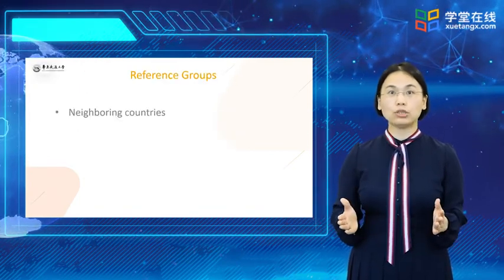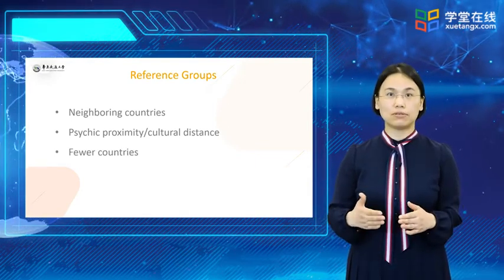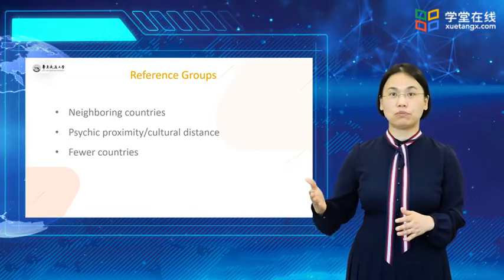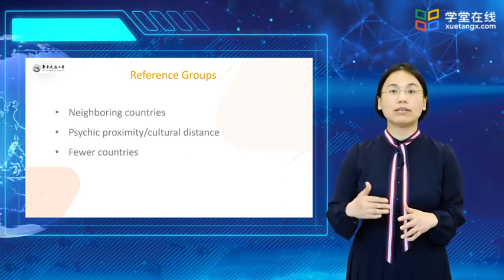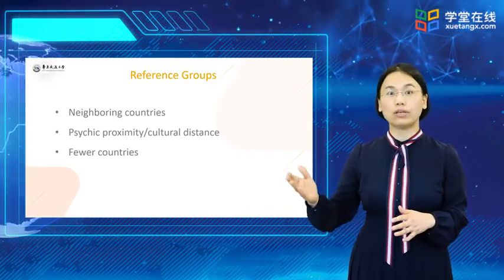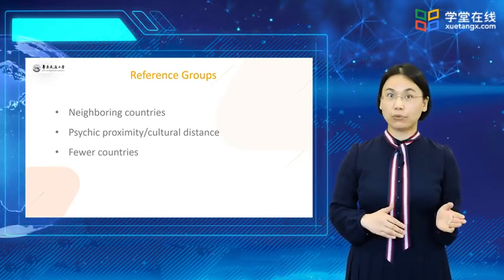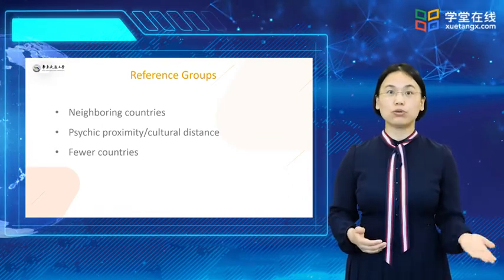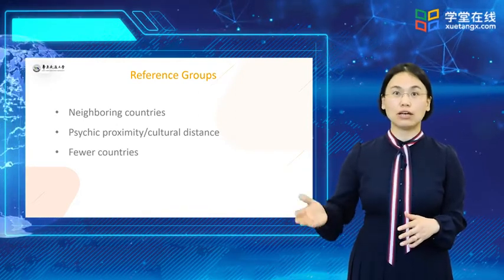However, as many nations and regions integrate their trading policies and standards, each market still has unique features. Readiness for different products and services, and attractiveness as a market, depends on the market's demographic, economic, social-cultural, natural, technological, and political-legal environments. Many companies prefer to sell to neighboring countries because they understand them better and can control their entry costs more effectively. At other times, psychic proximity determines choices.